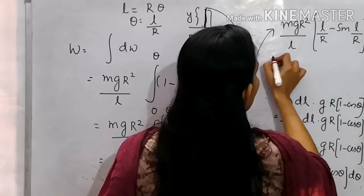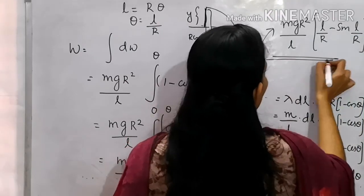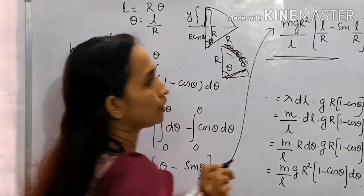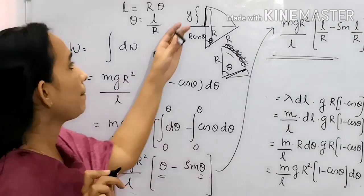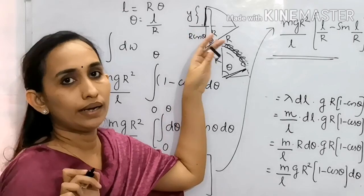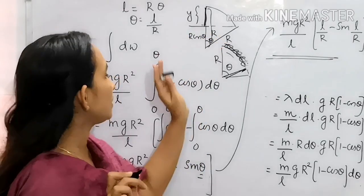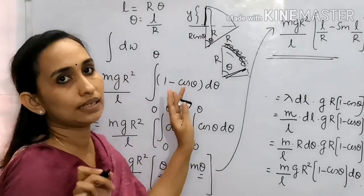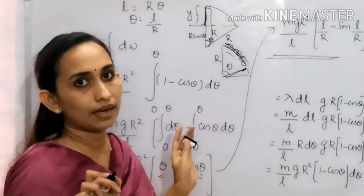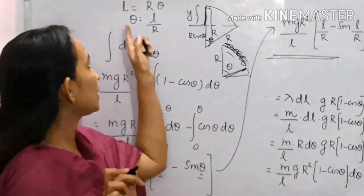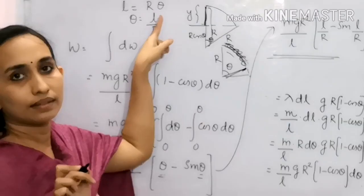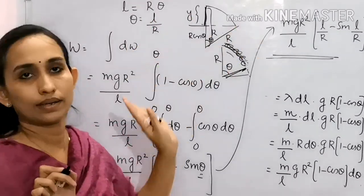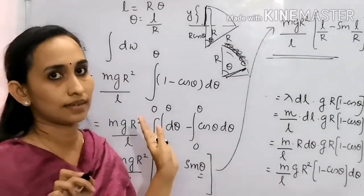Substituting, the total work done is W = (mg·r²/l) · (l/r − sin(l/r)), which simplifies to W = mgr·(1 − (r/l)·sin(l/r)). This is the final answer for the work done to pull the chain slowly from the circular surface onto the horizontal table.